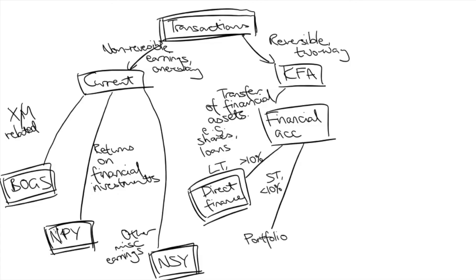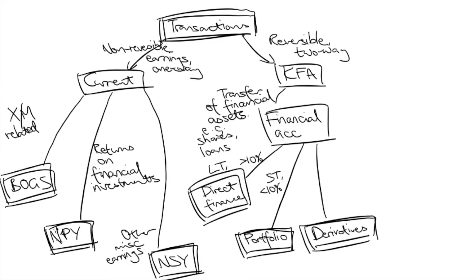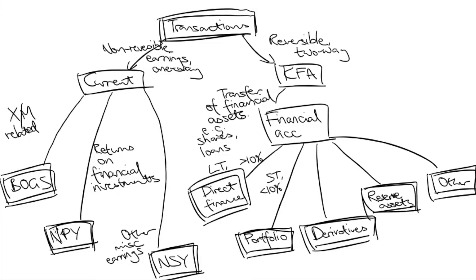More speculative and short-term purchases of shares and loans are recorded in the portfolio investment subaccount, and conversely are purchases of less than 10% of company shares. Financial derivatives are where the sale of financial instruments such as futures, forwards, swaps, and options are recorded — I'll explain this in more detail in another video. Transactions made by the RBA are recorded in the reserve assets account; examples include buying and selling of foreign currency or gold to influence the exchange rate.